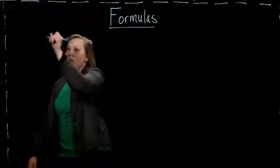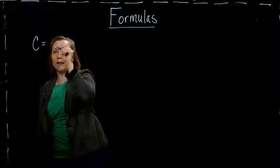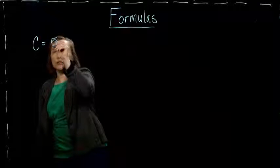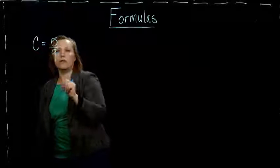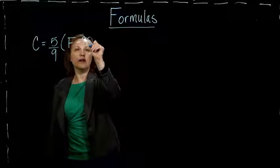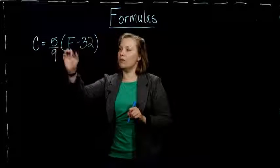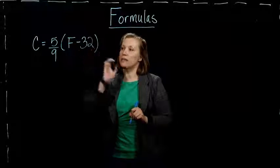We had solved the formula that relates Celsius temperature to Fahrenheit temperature for Celsius. So we have the Celsius, C equals 5 ninths times F minus 32.